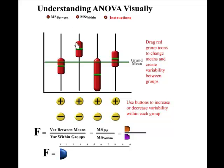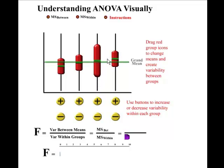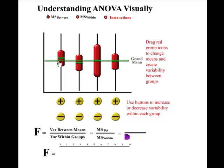Notice that if we move all of the means towards the grand mean, we give all of the groups the same mean. Then the F-statistic is very small, and that makes sense because the null hypothesis is that all four groups have the same mean.